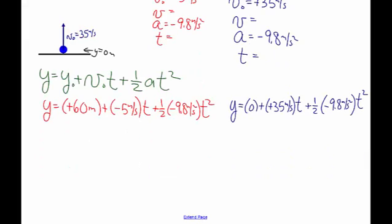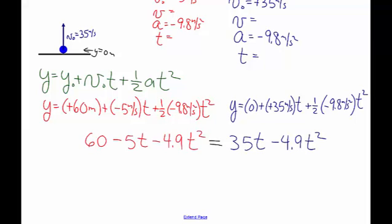As I set the two equations equal to each other, I'm going to drop out the units, just so it's not confusing with the variables and the units being mixed together. And I'm also going to make simplification, so the half times negative 9.8 is negative 4.9. So I've set the two equations for the height of the two objects equal to each other.